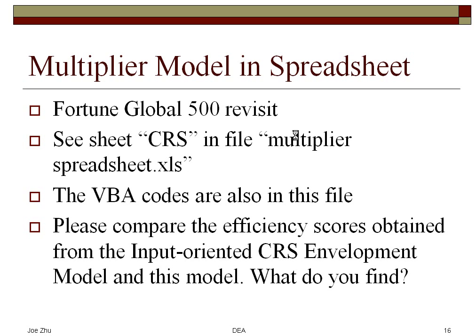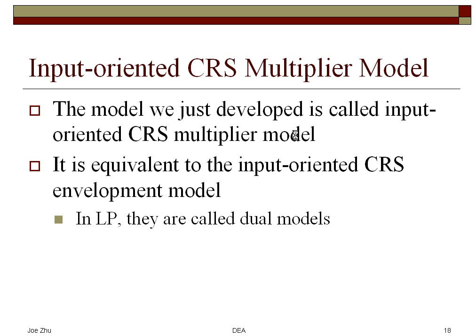I think it's a good idea that if you try to solve this multiplier model in Excel spreadsheet on myrpi, you have this file that contains the model and also the VBA codes that automate the calculation process. Now, once you've finished the calculation of this particular model, I want you to compare the input-oriented CRS envelopment model that we discussed last time in the last set of slides with this model, and to see what you can find in terms of the relationship between the efficiency scores. And, in fact, you're going to find out the efficiency scores are exactly the same.